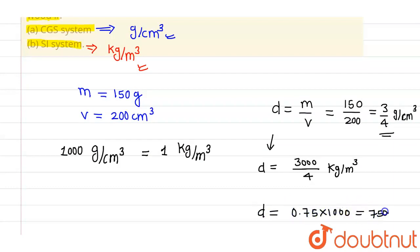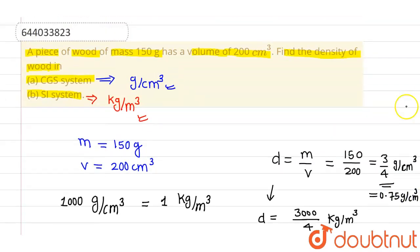750 kilogram per meter cube, and this can also be written as 0.75 gram per centimeter cube. So these are the densities in CGS as well as SI system of units. I hope you understood, thank you.